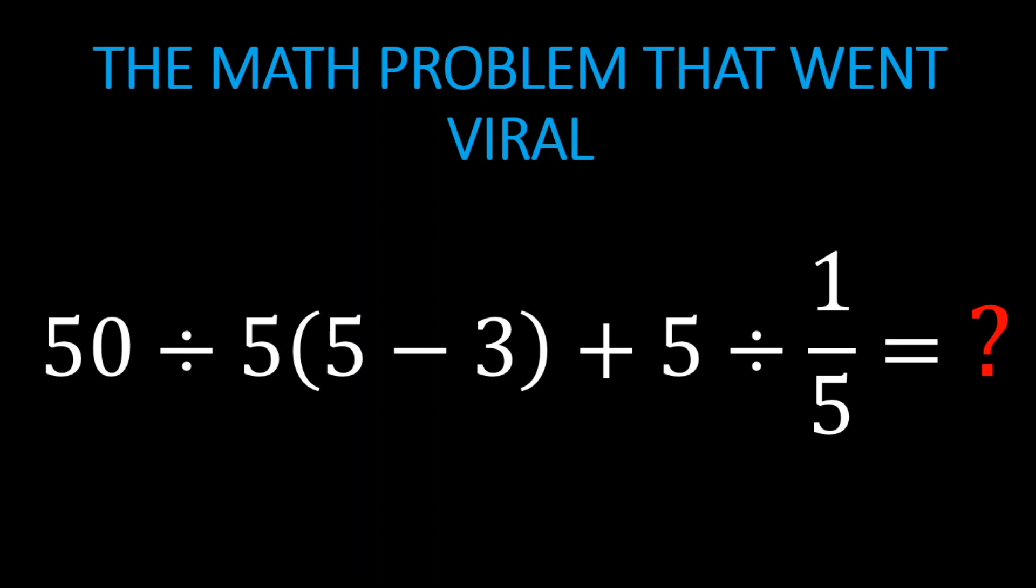50 divided by 5, parentheses 5 minus 3, plus 5 divided by the fraction 1 over 5, equals what?